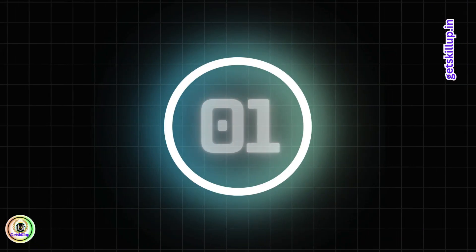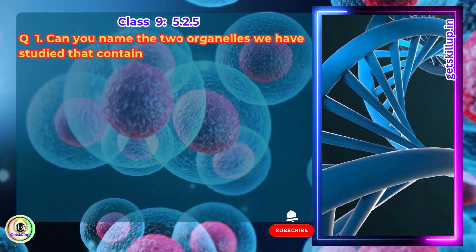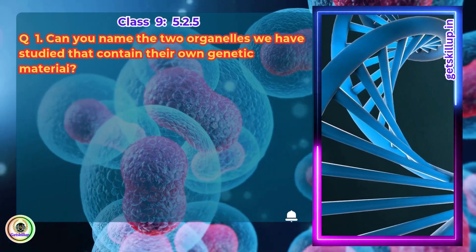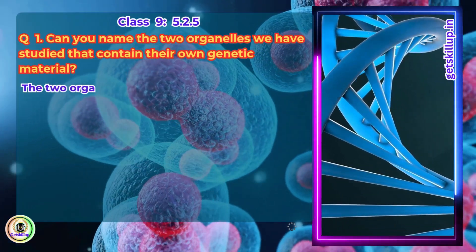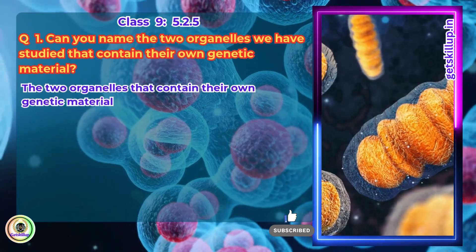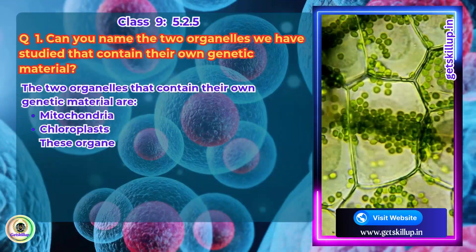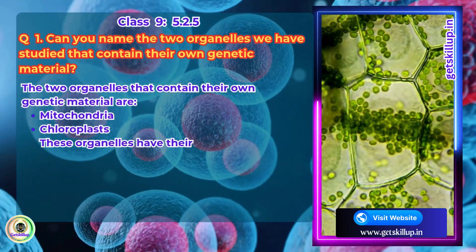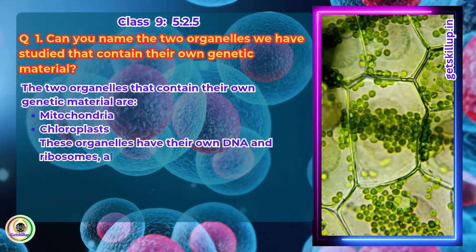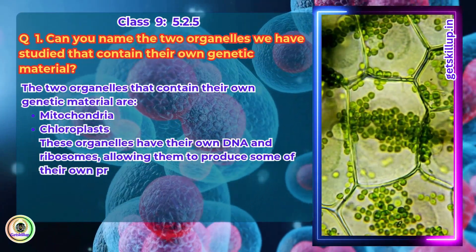Question 1. Can you name the two organelles we have studied that contain their own genetic material? The two organelles that contain their own genetic material are mitochondria and chloroplasts. These organelles have their own DNA and ribosomes, allowing them to produce some of their own proteins.